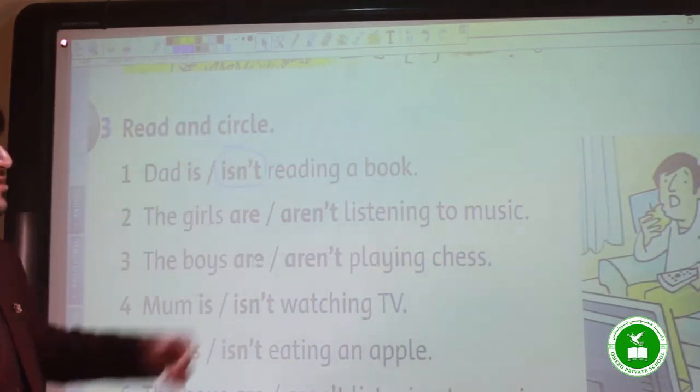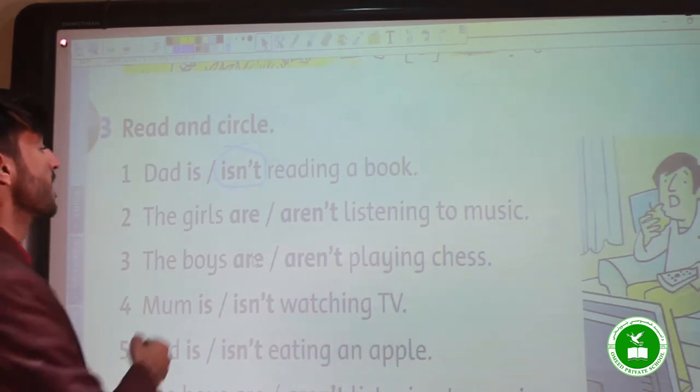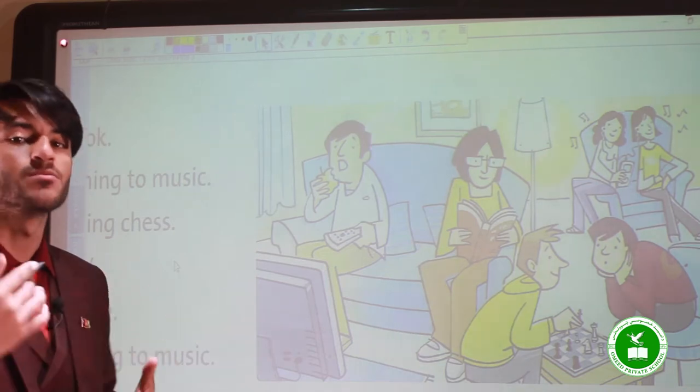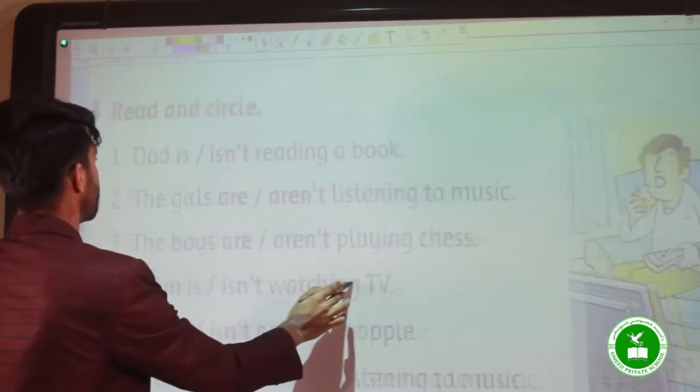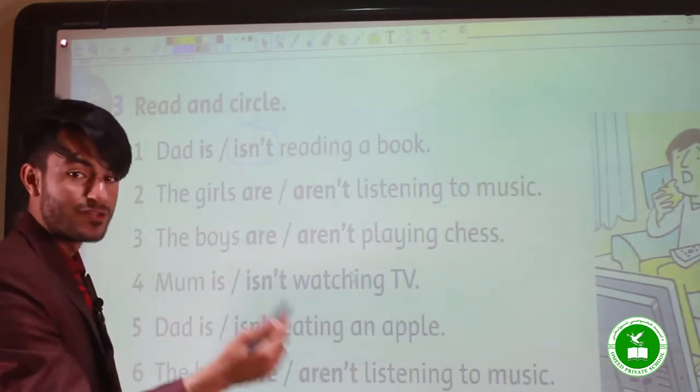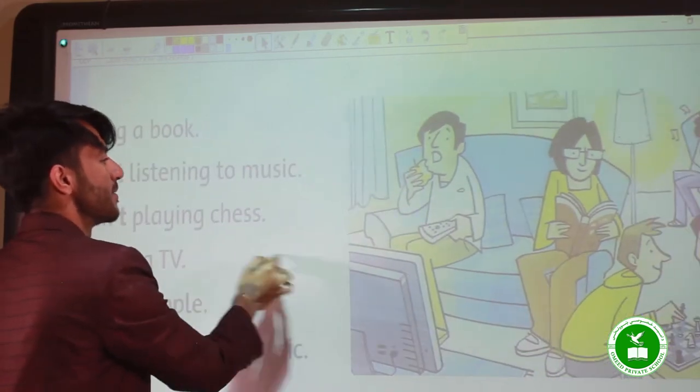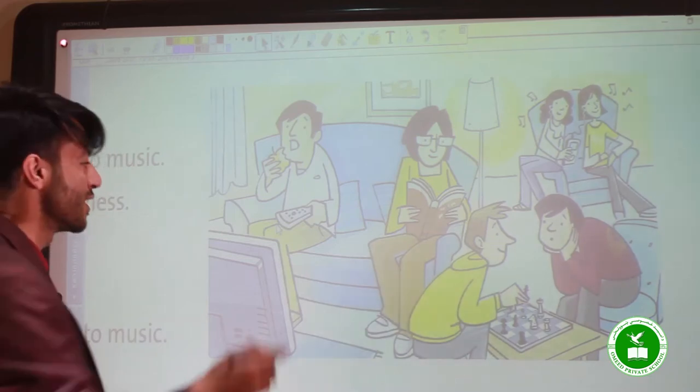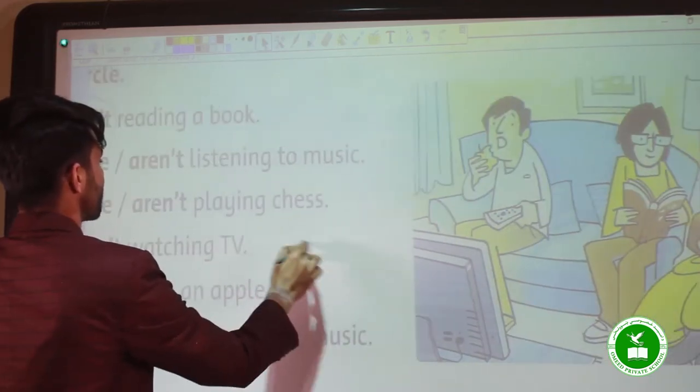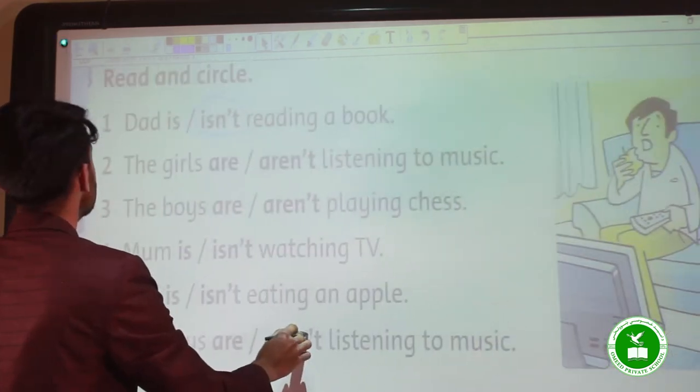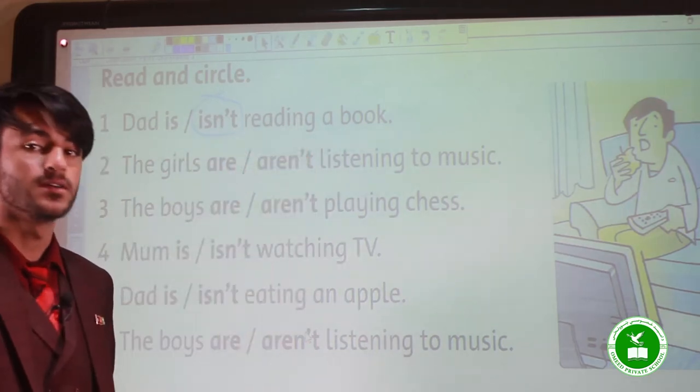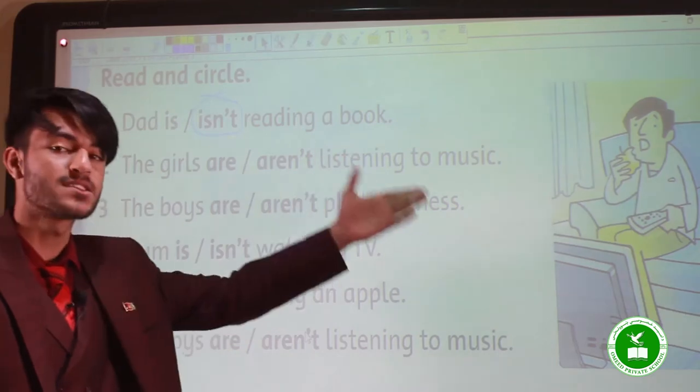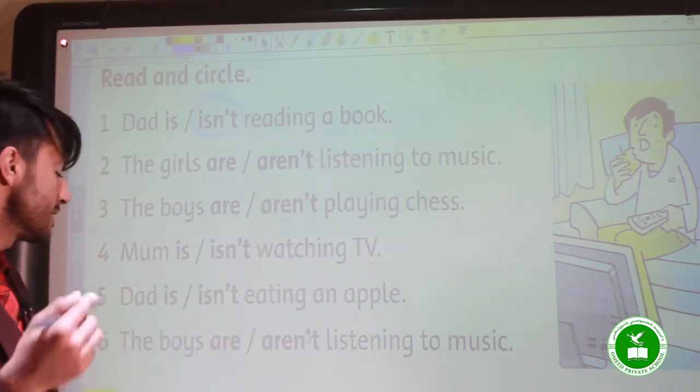The third part: read and circle. Again, we look at the picture. For example, the first one: Dad is or isn't reading a book? Here it is, Dad. Dad is not reading a book. Very good. Let's go to the other part.